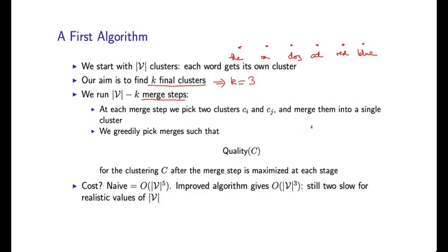So, for example, say I choose to merge V and A. Then I end up with a new partition, which is that C(V) equals C(A) is equal to 1, say. C(dog) is equal to 2, C(cat) is equal to 3, and so on. So every word is still in its own cluster, except for these two words, which are now in a single cluster.